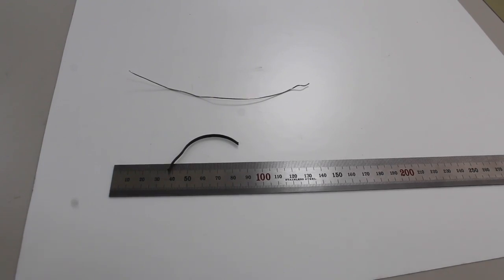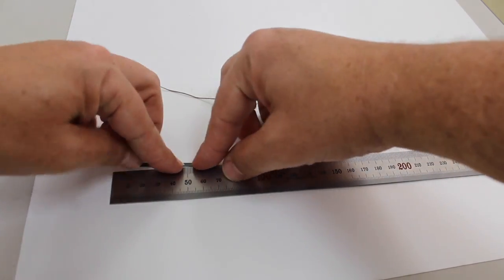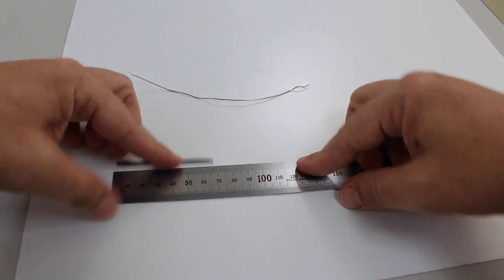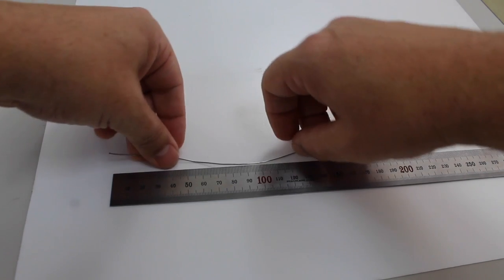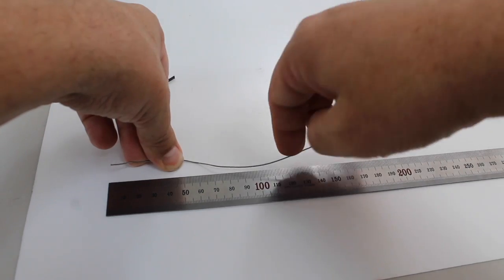Here I have my magnesium strip about seven centimeters. And my piece of wire slightly over 115 centimeters.